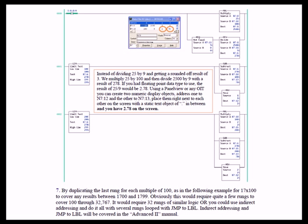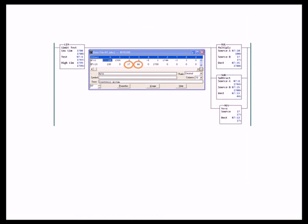By duplicating the last rung for each multiple of 100, as in the following example, you can continue this process as high as you want to go. In order to use this type of logic, you would have to create a rung for each range of 100 counts. In this rung, we are covering the test values for N7:4 from 1700 to 1799. So if our value is between 1700 and 1799, then this rung will execute. All the other rungs will not execute because their limit test is for another range of 100 counts. So here we end up with two values, 17 and 44, and then we could display that as 17.44. In order for this to work, you would have to have a rung in logic for every range of 100 counts all the way from 0 to 32,767.